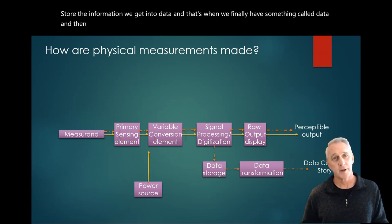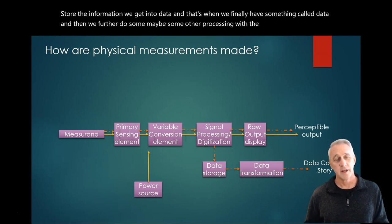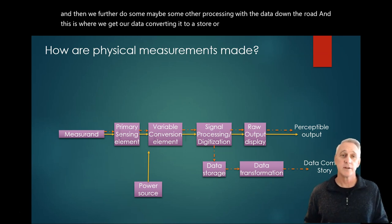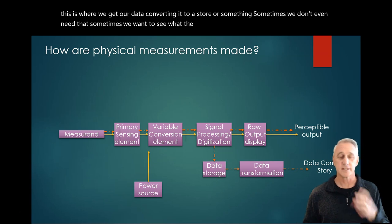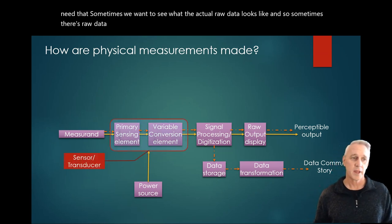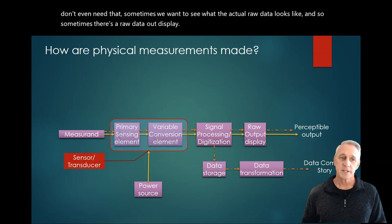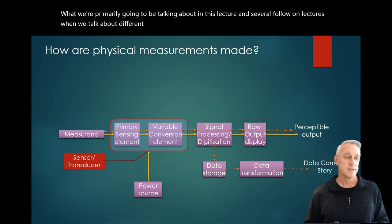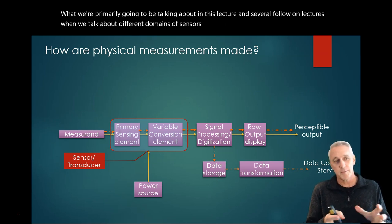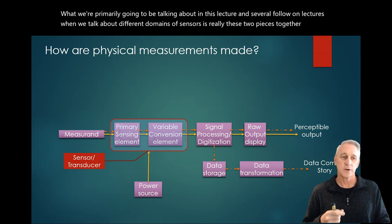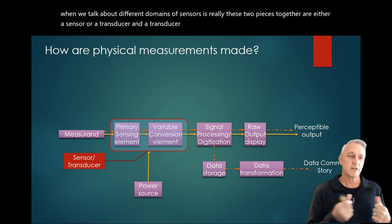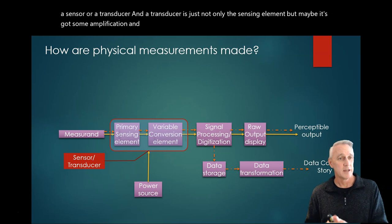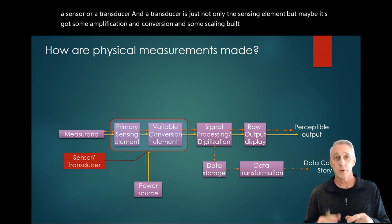Then we further do maybe some of the processing with the data down the road, and this is where we get our data converting into a story. Sometimes we don't even need that. Sometimes we want to see what the actual raw data looks like. What we're primarily going to be talking about in this lecture and several follow-on lectures when we talk about different domains of sensors is really these two pieces together are either a sensor or a transducer. A transducer is just not only the sensing element, but maybe it's got some amplification and conversion and some scaling built in in tandem with the sensor itself.